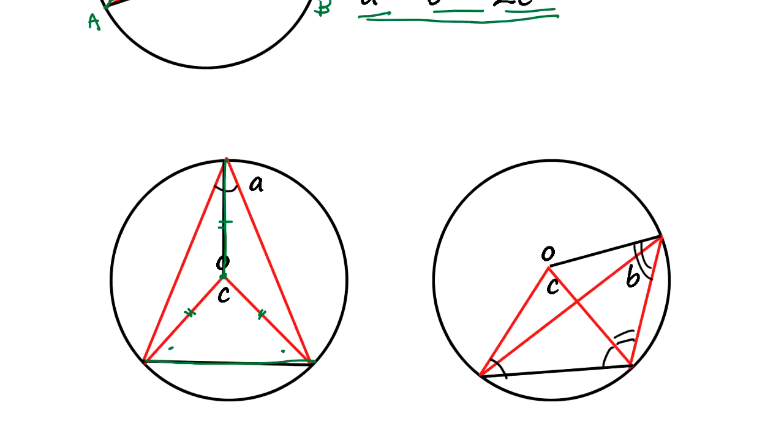That means this and this angle is the same. And also, this line has the same length. So we have this triangle and this triangle have X, X, Y, Y.